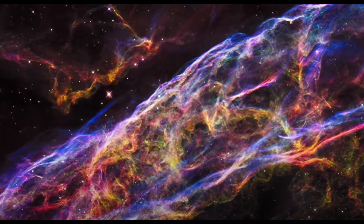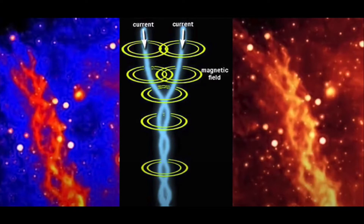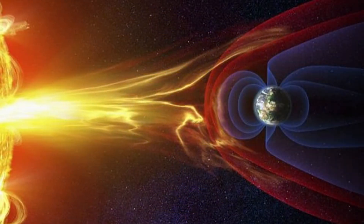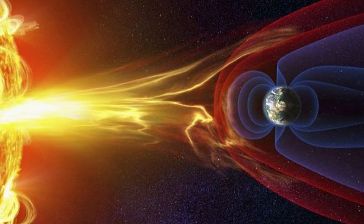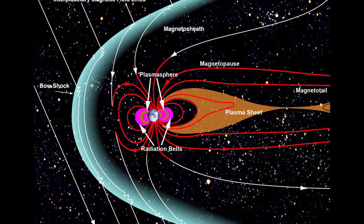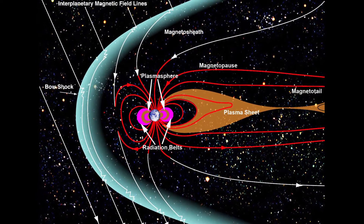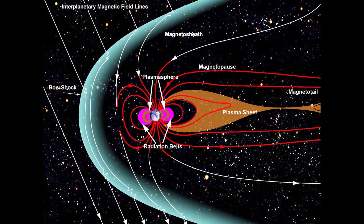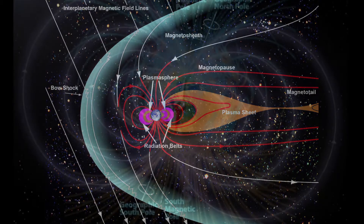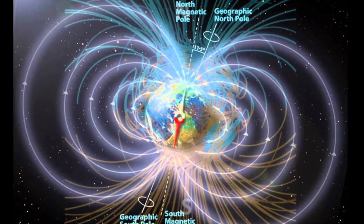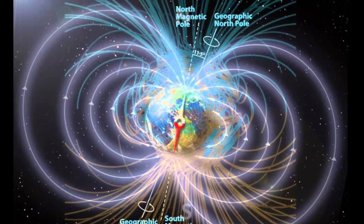We live in an electromagnetic universe. Electric currents cause magnetic fields, and magnetic fields cause electric currents. Our Earth receives its energy through charged electromagnetic currents from the Sun, which through natural electromagnetic field barriers — our magnetosphere, plasma and atmosphere — is being transformed into an energy form that is receivable for all living organisms on the planet.